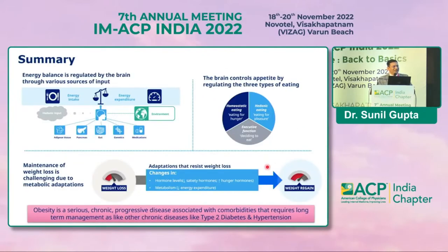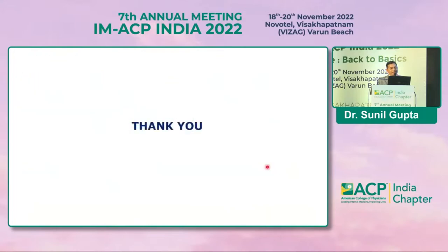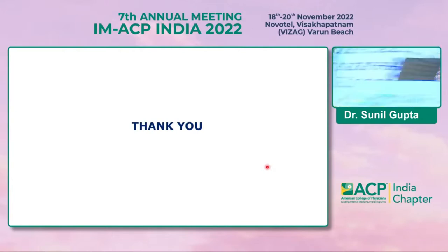In summary: energy balance is regulated by the brain through various inputs. The brain controls appetite through three types of eating — homeostatic, hedonic, and executive. The maintenance of weight loss is challenging due to metabolic adaptation, where the brain brings you back to your original weight through various mechanisms.